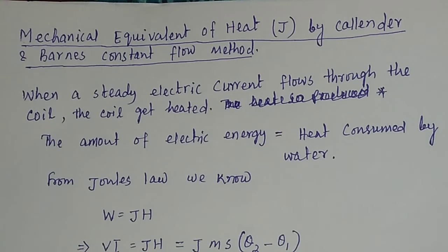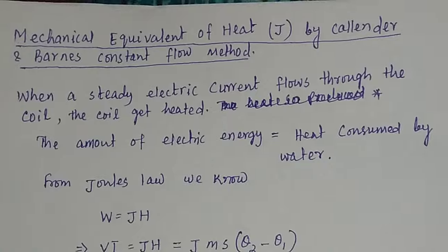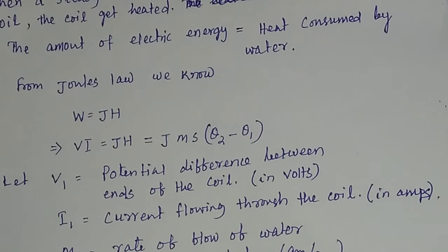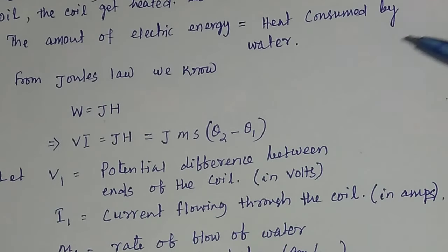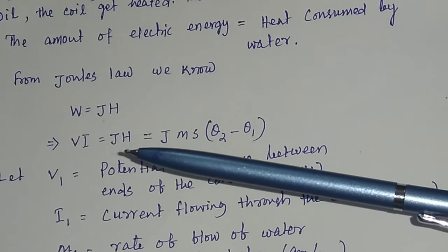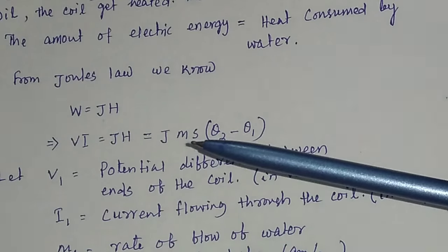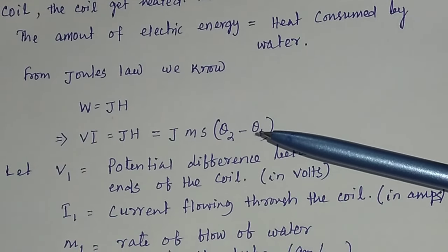When a steady electric current flows through the coil, the coil gets heated, and as a result the water flowing through the tube also gets heated. The basic principle is the amount of electric energy is equal to the heat consumed by water. From Joule's law we know W equals J times H. If you convert the amount of work done in terms of potential and current, then W equals V times I, which equals J times H, and H equals M times S times theta, where theta is the difference in temperature, that is theta-2 minus theta-1.